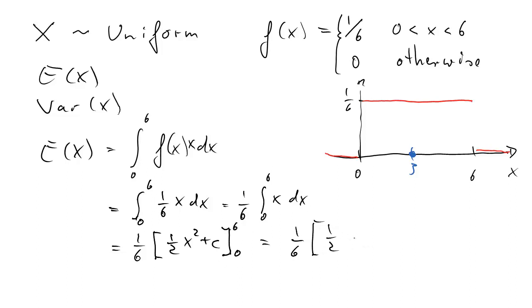Let's do it formally. This is 1 over 6, then in square brackets first we evaluate it at 6, so we have 1/2 times 6 squared plus c, and then minus the same term evaluated at 0, which will be 1/2 times 0 squared plus c. Since we have a minus here we have minus c, and you can immediately see that the c cancels out.